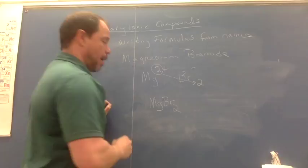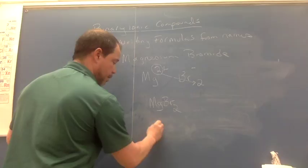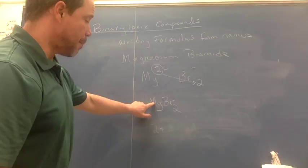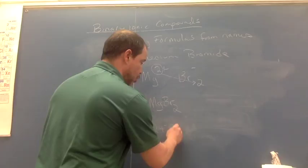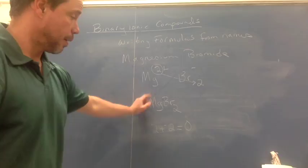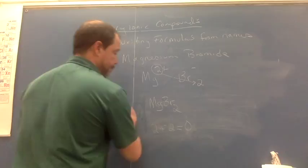This is a balanced chemical formula. There's one magnesium with a 2+ charge, and two bromide ions each with a 1− charge. Two times −1 is −2, and 2+ plus −2 equals zero, so the formula is balanced.